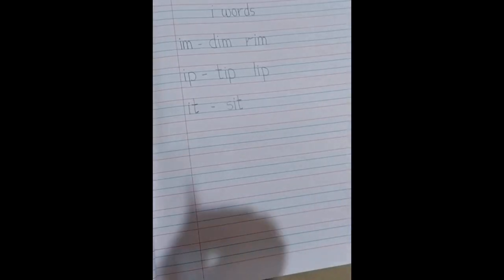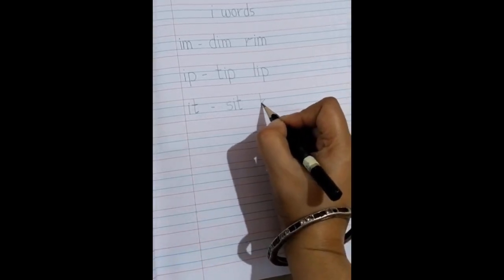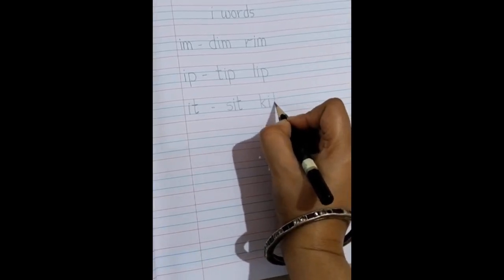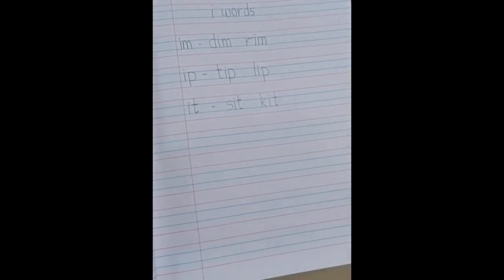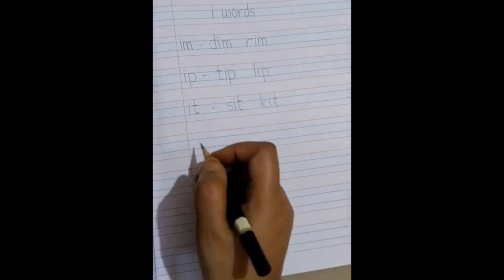And then we will write a kit. K, I and a T. Now you can see that it is between the red and the blue lines. It is not moving out. Similarly, you will also have to write between the red and blue lines. Now moving on to the next word.